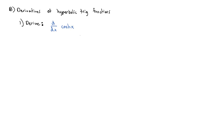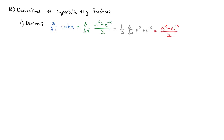You might guess that since the derivative of cosine is negative sine, the derivative of hyperbolic cosine might be negative hyperbolic sine. Let's check: hyperbolic cosine equals e to the x plus e to the negative x over 2. That constant one-half pulls out front, and the derivative of e to the x plus e to the negative x is e to the x minus e to the negative x. With the one-half out front, that's exactly equal to the hyperbolic sine of x. So the derivative of hyperbolic cosine is positive hyperbolic sine.